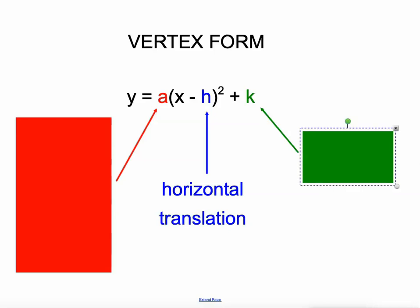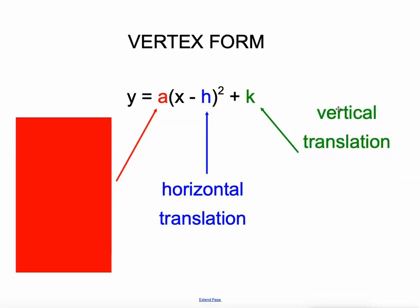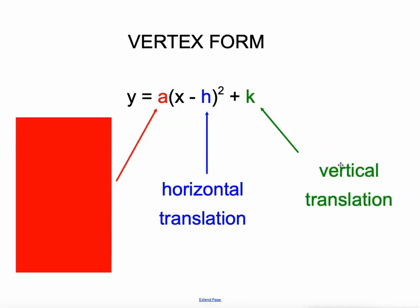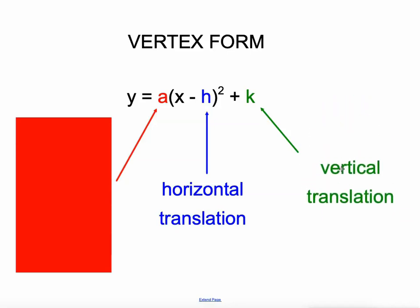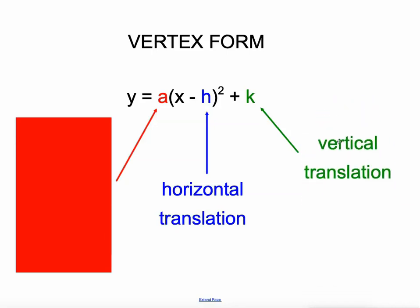This K value right here is the vertical translation. It's how far the parabola — y equals x squared — has been translated, slid up or down.